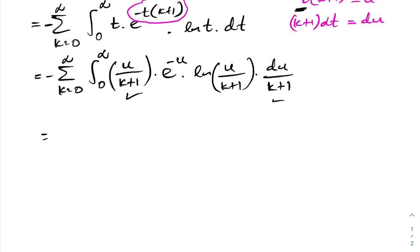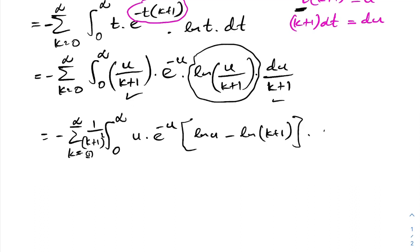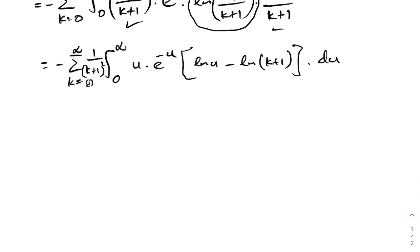We can simplify: (k plus 1) squared appears, which we take outside the integral as a constant. So we have minus sum from k equals 0 to infinity of 1 over (k plus 1) squared, times the integral from 0 to infinity of u times e to the minus u times natural log of u over (k plus 1). By the property of natural log, we write this as natural log of u minus natural log of (k plus 1), and we split the integral into two.